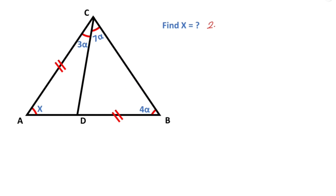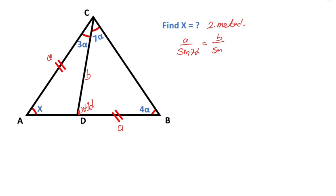We will calculate the value of alpha using the second method. First of all, let's call these two equal sides A units, and this common side, let's call it B. And then, we know that 2 interior angles equal 1 exterior angle, so here must be X plus 3 alpha. For this triangle, if we apply the sine rule: A over sine 7 alpha equals B over sine 4 alpha. So A over B must be equal to sine 7 alpha over sine 4 alpha. This is the first equation.